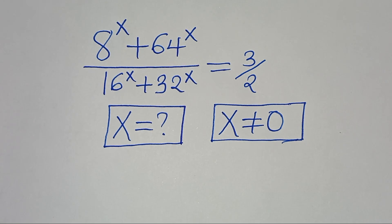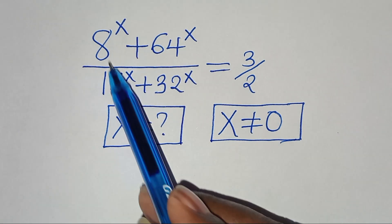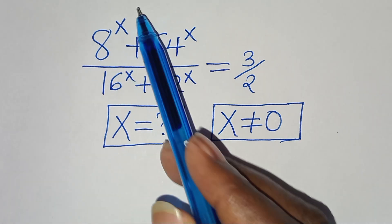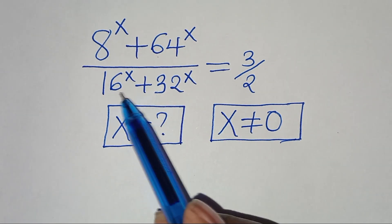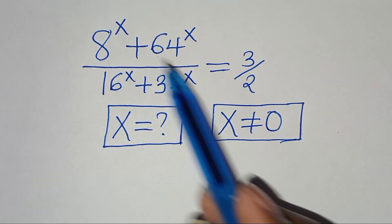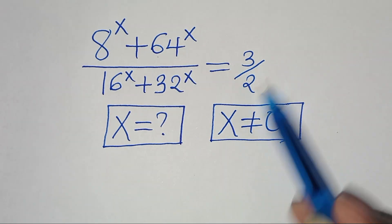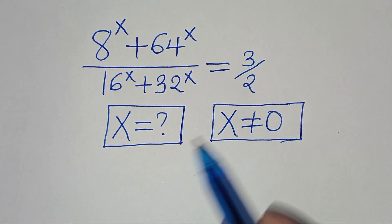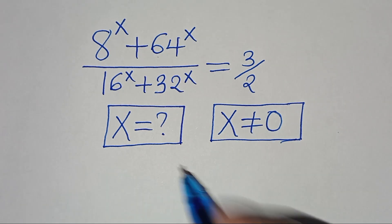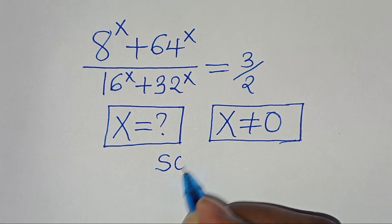Hello everyone, you are welcome to solve this nice math problem, which is 8 to the power of x plus 64 to the power of x, divided by 16 to the power of x plus 32 to the power of x, and this is equal to 3 over 2. So what is the value of x given that x is not equal to 0?